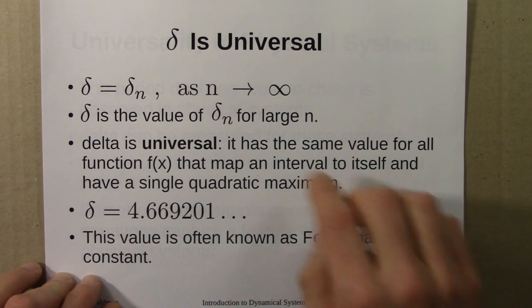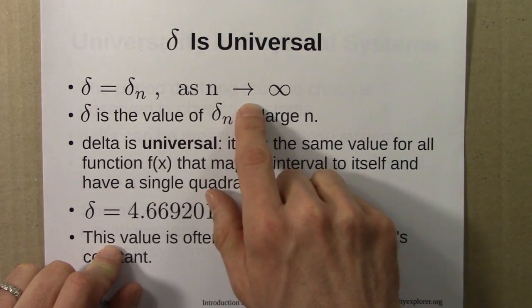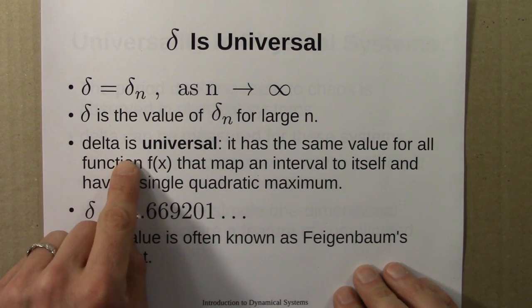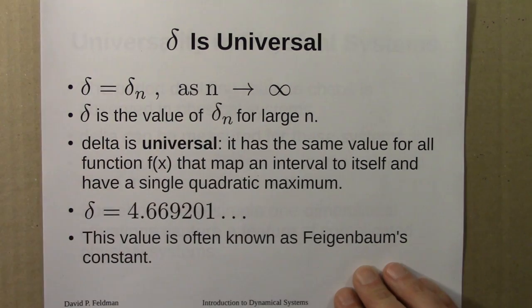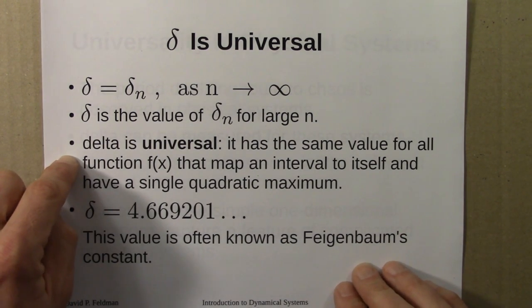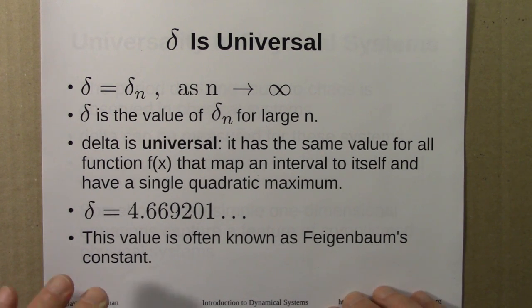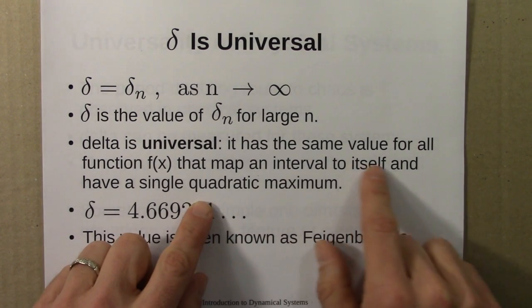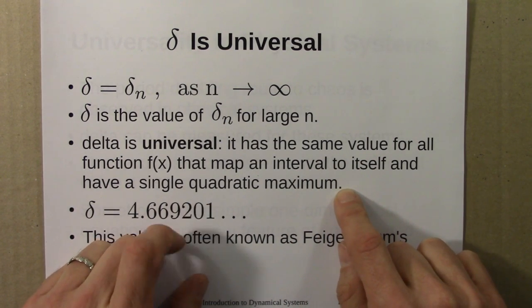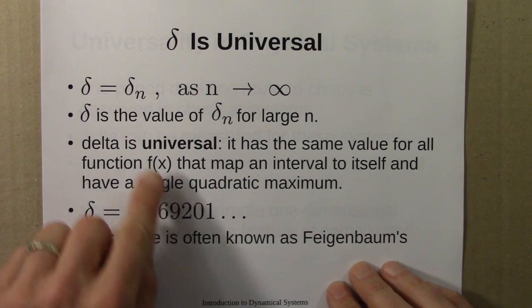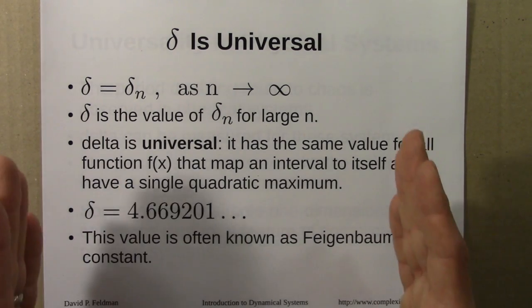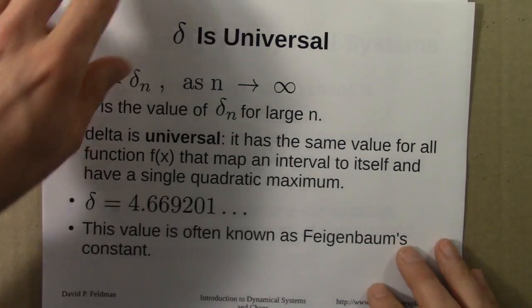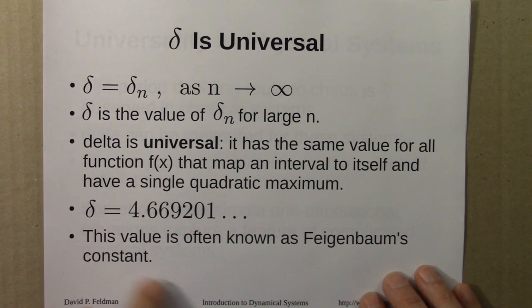The main result is that delta_n, as n approaches infinity — as n gets large — approaches a number delta, and the value of this delta is universal. Delta is the value of delta_n for large n, as we look at larger and larger periods. Delta is universal, meaning it has the same value for all functions f(x) that map an interval to itself and have a single quadratic maximum. Pretty much any function that has a single maximum on some interval will undergo period doubling, and will do so such that the ratio of one bifurcation to the next approaches the same value: 4.669201. This value is often known as Feigenbaum's constant.